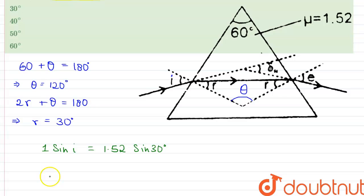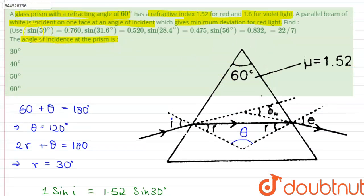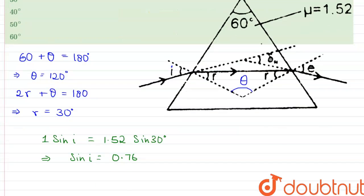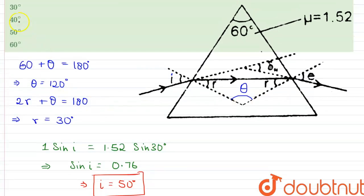Therefore, on calculating this we find out that sine i is equals to 0.76. And as it is given in the question that sine 50 degrees is equal to 0.76, therefore from this we can clearly see that i is equals to 50 degrees. Therefore, on this explanation we can say that the answer is option c. Thank you.